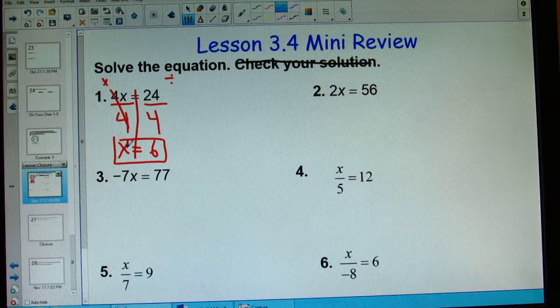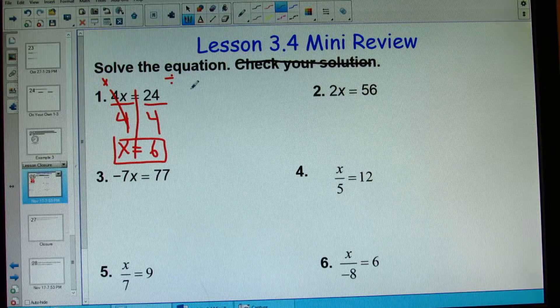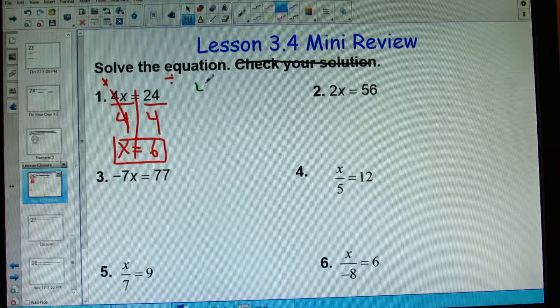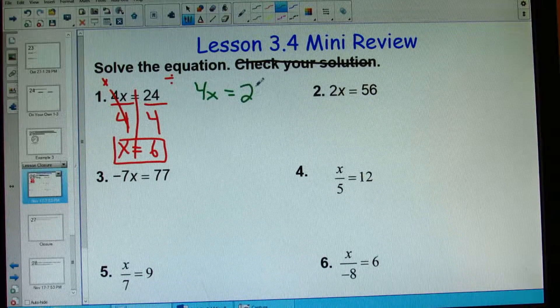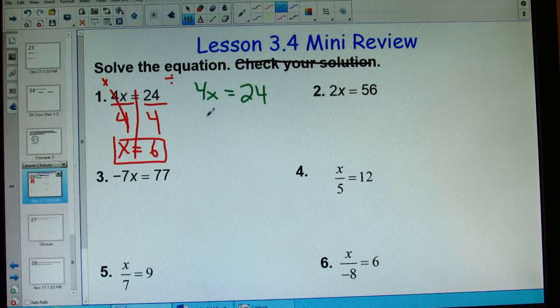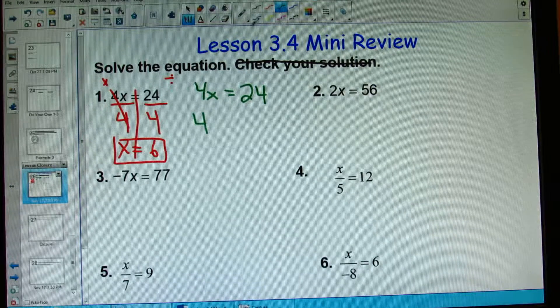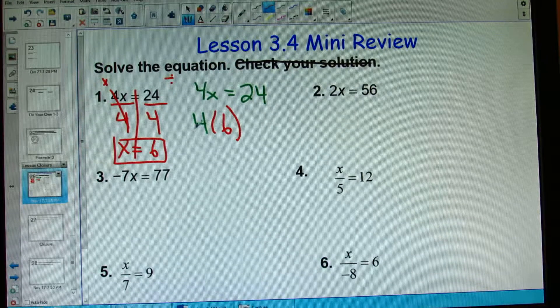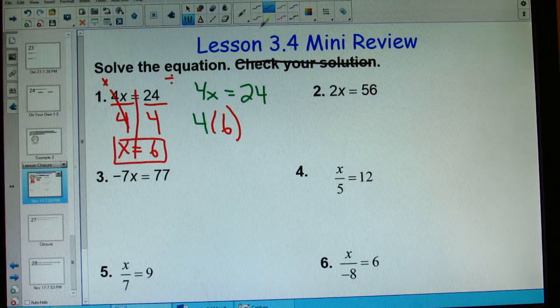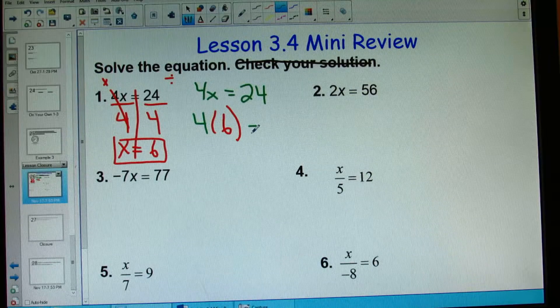I know I'm done when the variable is isolated. Now in order to check, we follow three different steps. Rewrite the original problem. Now replace. Instead of x, replace it with our answer, which was 6. And this is showing multiplying, so I'm going to use parentheses to show multiplying in my check.